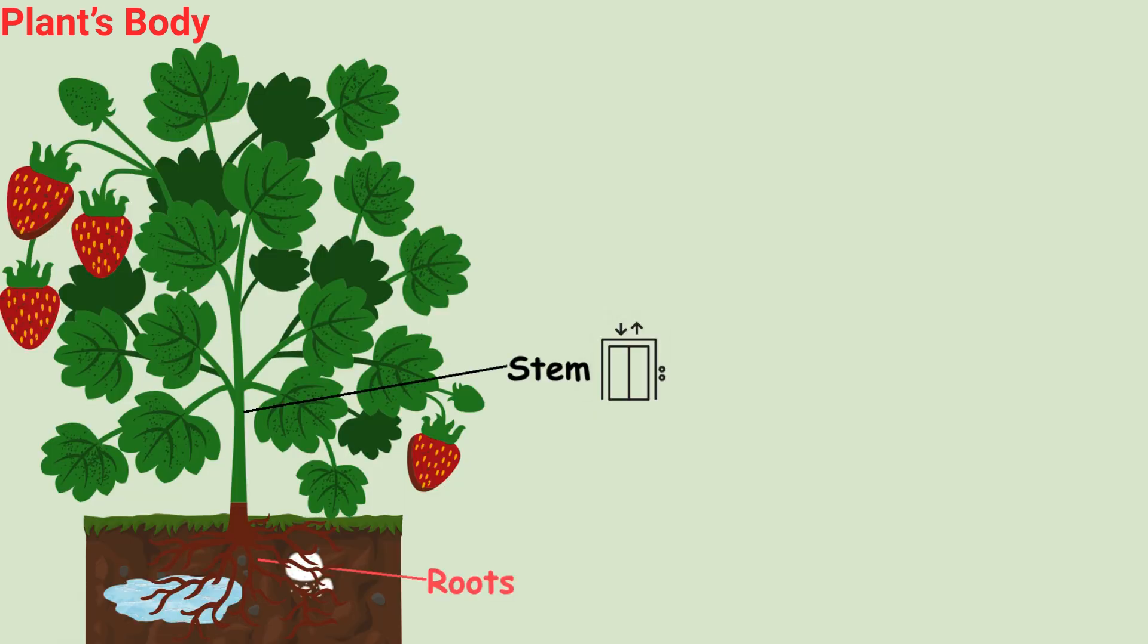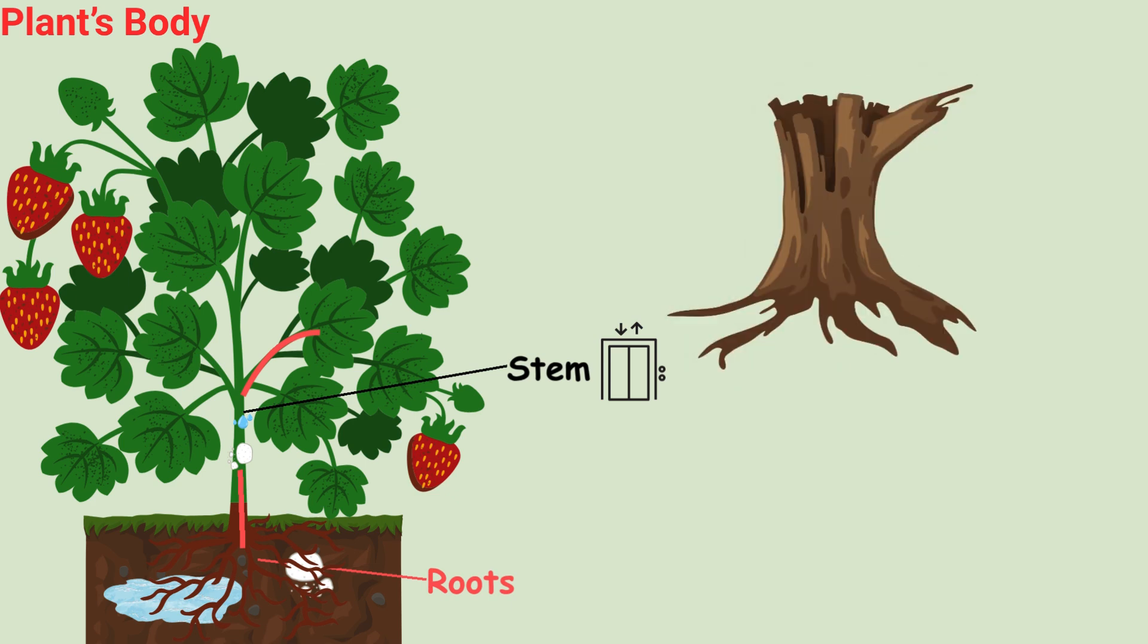Stem. The plant's elevator. It carries water and food between the roots and the leaves. It also holds the plant up. Some stems are strong and thick, like trees, and some are soft and green.